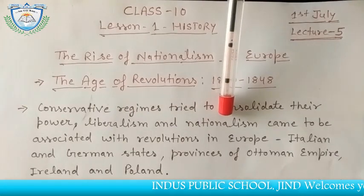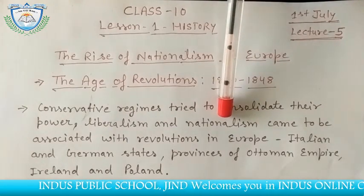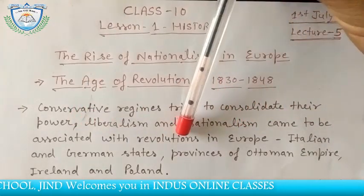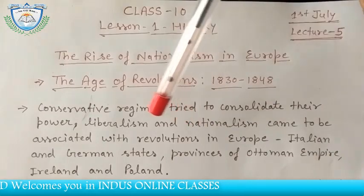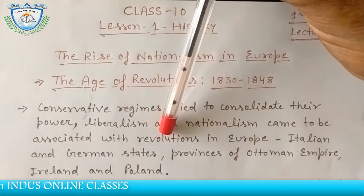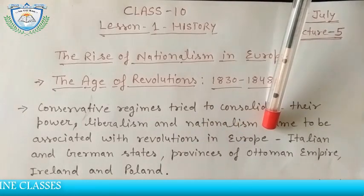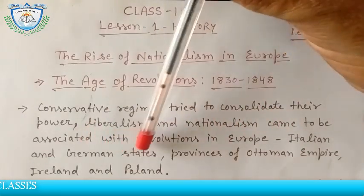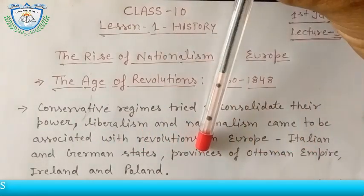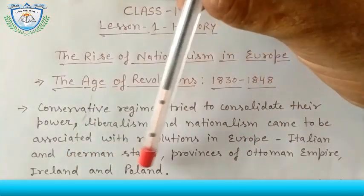— people who were fighting for the independence of their country, with nationalist feelings, came to be associated with revolutions in Europe. Liberalism and patriotism meant carrying out revolutions against kings across Europe. Many revolutions took place in Italian and German states, provinces of the Ottoman Empire, and in Ireland and Poland.